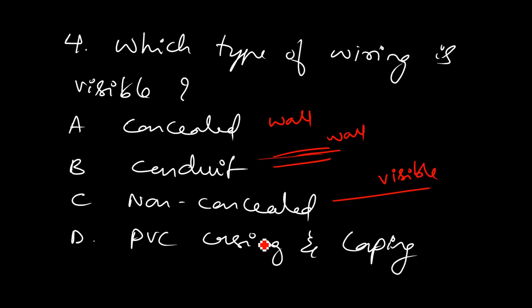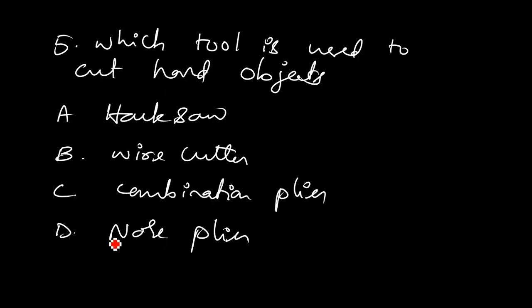Non-concealed: wire is visible, whereas PVC casing and capping covers the cable or wire. That is why the right answer is non-concealed. Think two to three times before choosing your answer. With respect to your concept being clear, you will get the right answer.